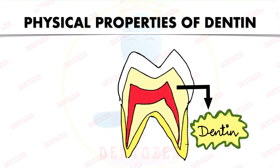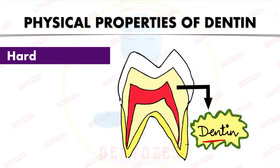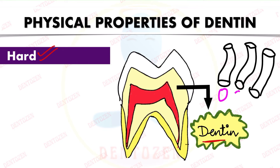Starting with physical properties: dentine is a hard tissue because it contains mineral, though less than enamel. It is formed with dentinal tubules by odontoblast cells. These odontoblast cells leave a process inside the dentinal tubules, so the tubules do not have cells of their own but contain the processes of odontoblastic cells.